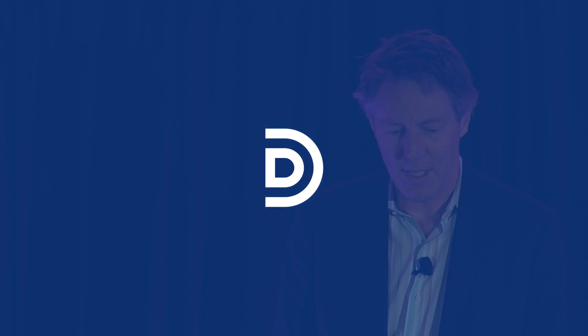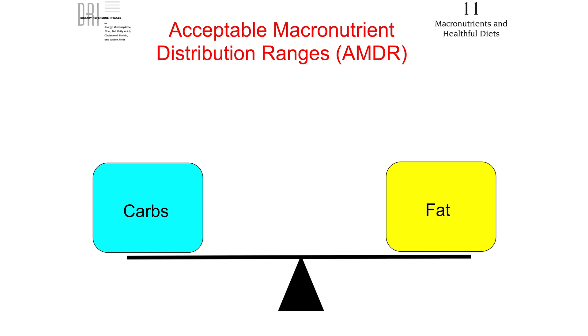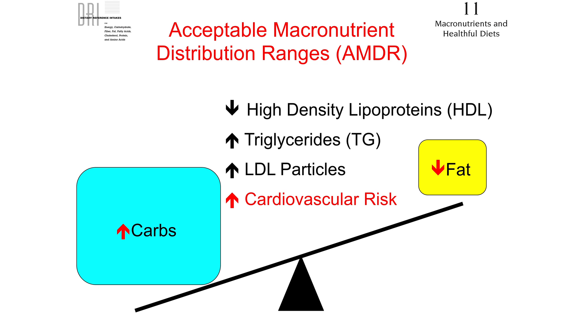But what happens in the DRI? They're trying to describe the balance between carbohydrates and fat in dietary intake. And what they say is if you eat too many carbohydrates, you're going to have a decrease in HDL, you're going to have more triglycerides, you're going to have more LDL particles, and ultimately you're going to increase your cardiovascular risk.